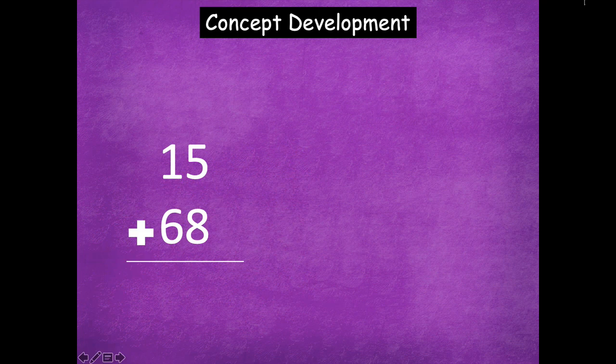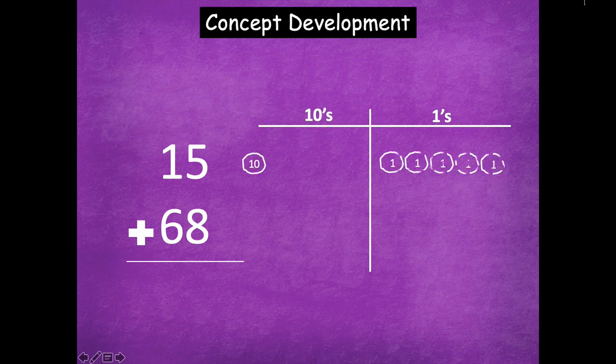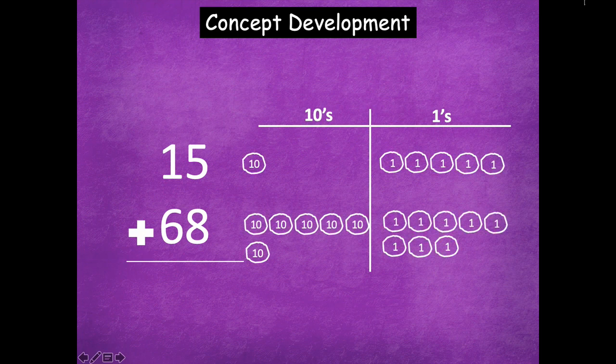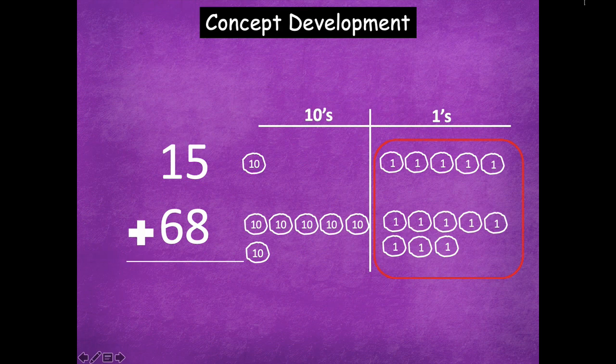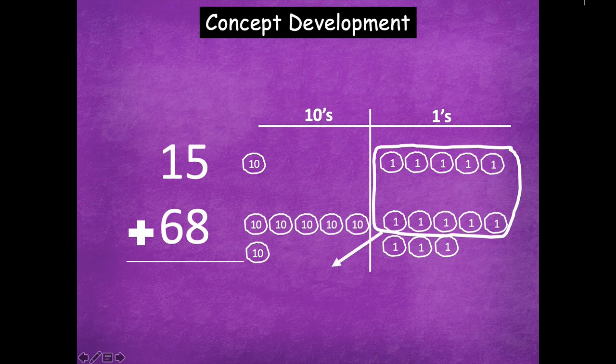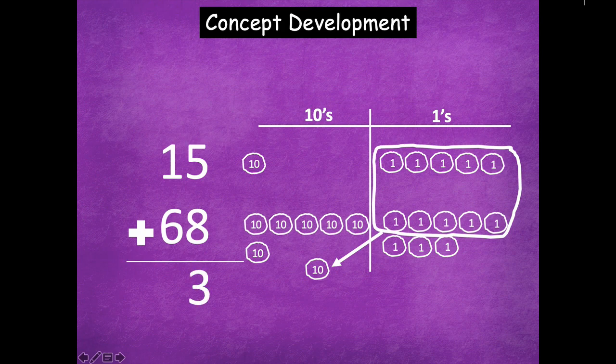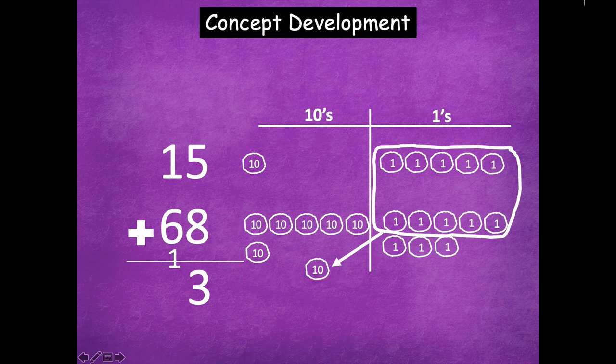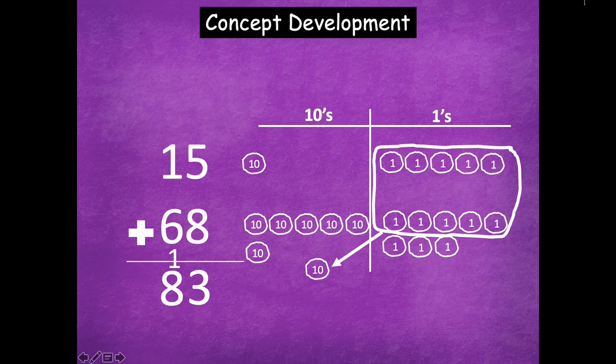All right, friends, make sure to pause if you need more time. Otherwise, here we go. So here's my chart. Here's 15 and here's 68 modeled together. I'm going to add my ones first. I'm going to group some of those together to make a 10. I'm going to create my new 10 or compose it. Let's model that below. So I have three ones left over and the new 10 that I made goes in the tens place. Then I add my tens. And I have eight tens. So 15 plus 68 equals 83.